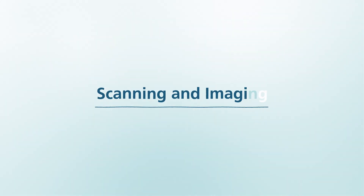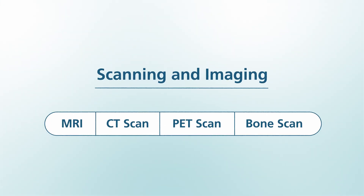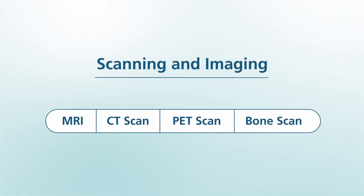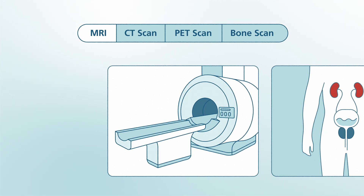Scanning and imaging. There are many types of scanning and imaging available to diagnose and check to see if the cancer has spread beyond the prostate. This video will go over the basics and we'll take a deeper dive in our next video. Magnetic Resonance Imaging, or MRI scans, use radio waves and magnets to give a clear image of the prostate.